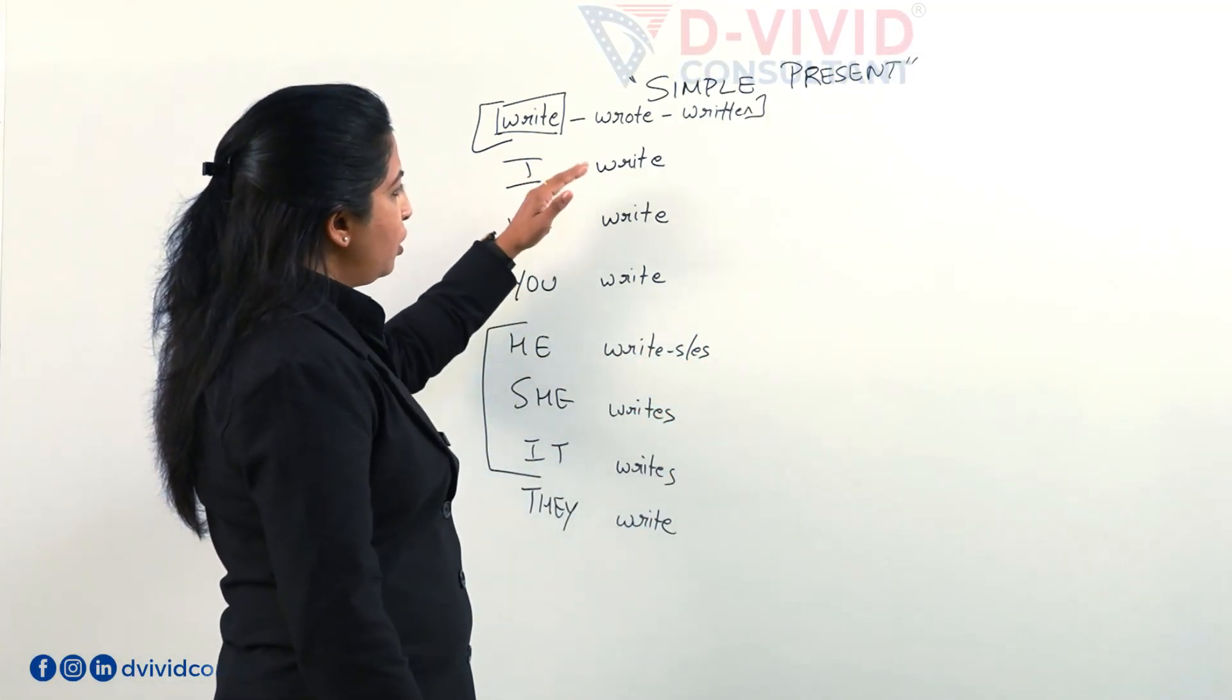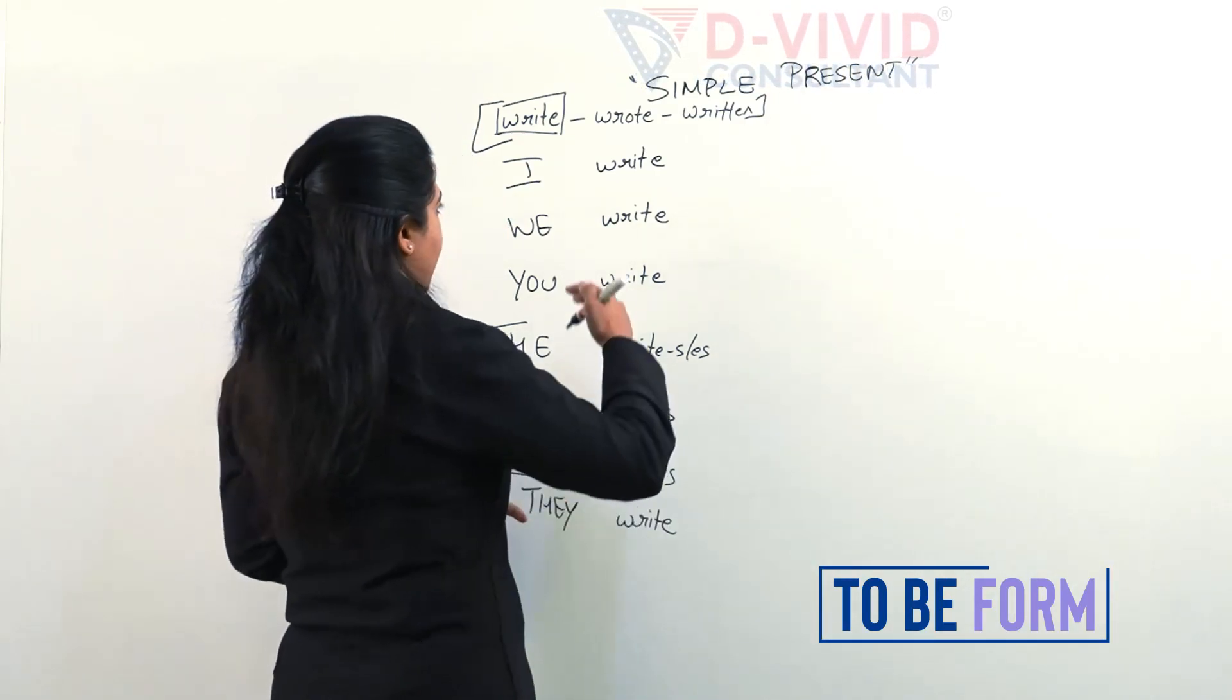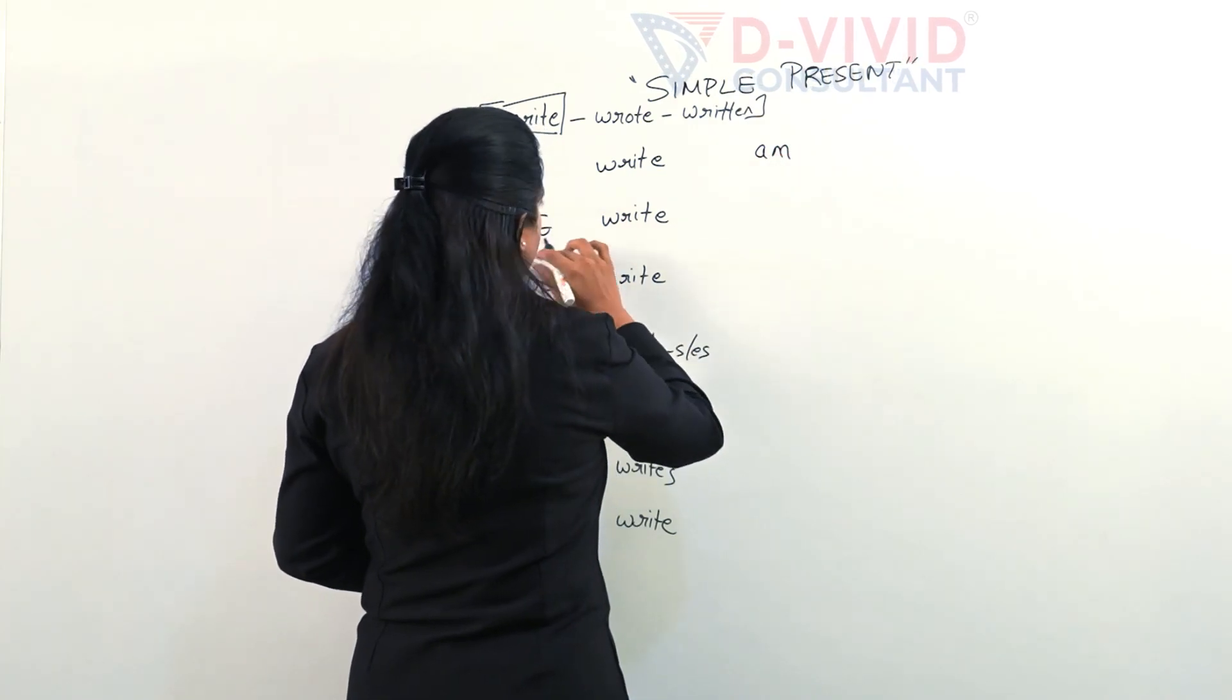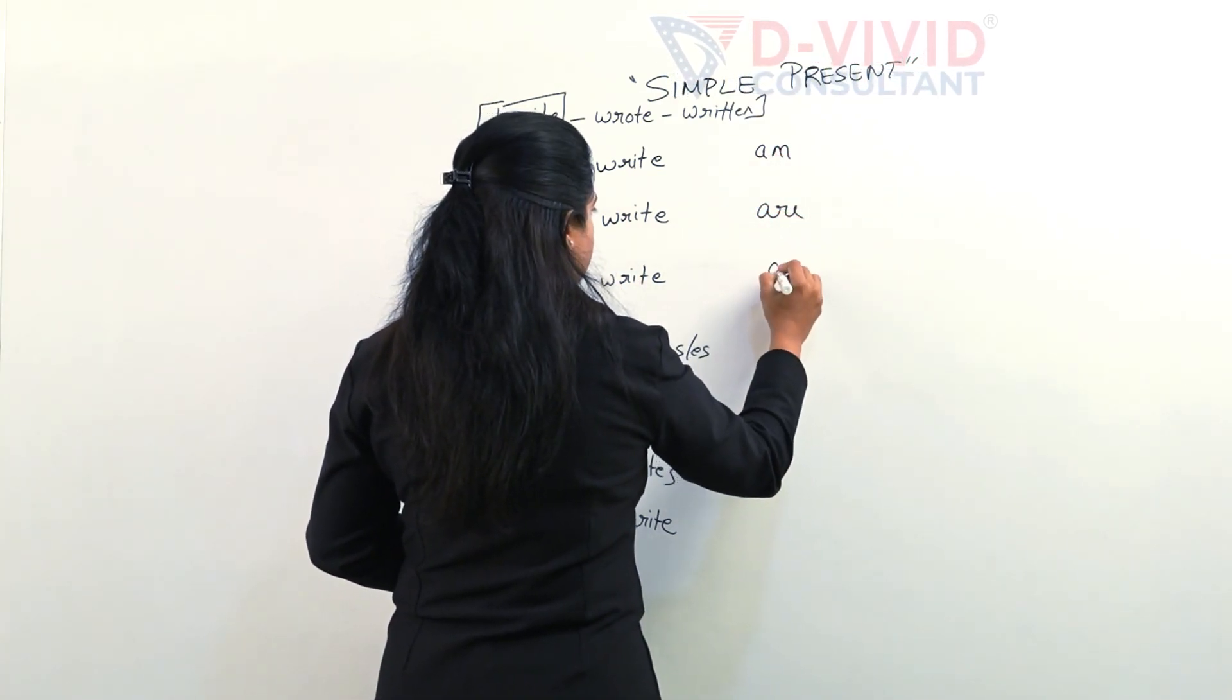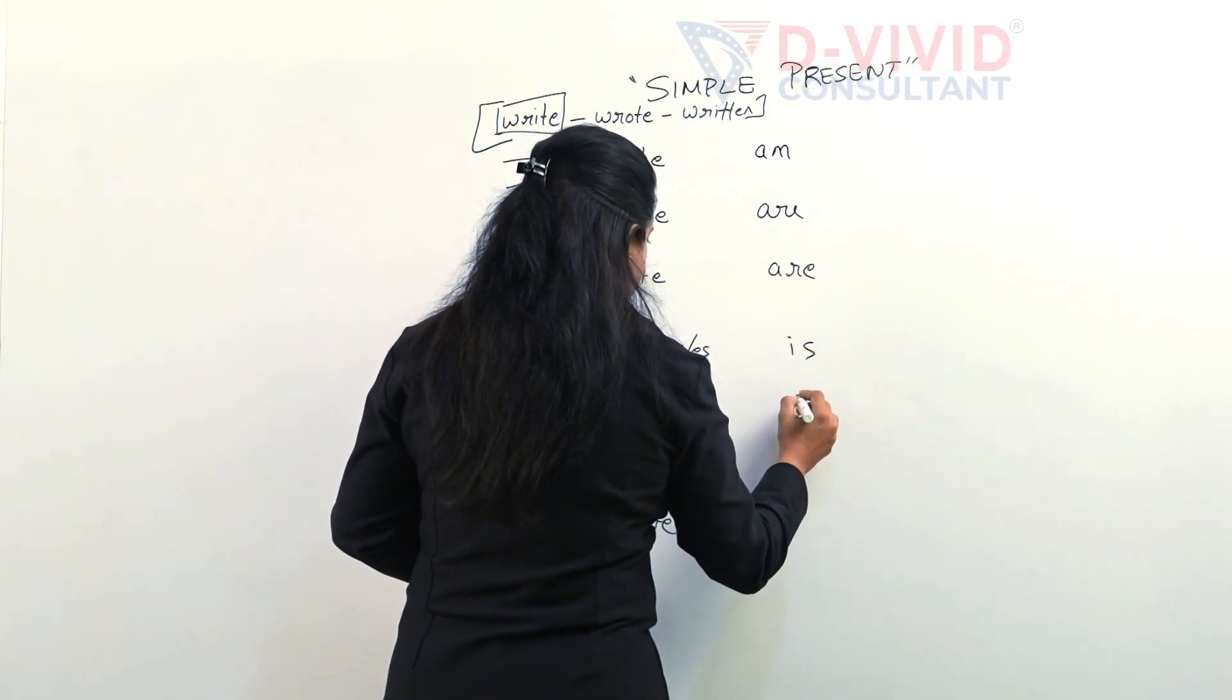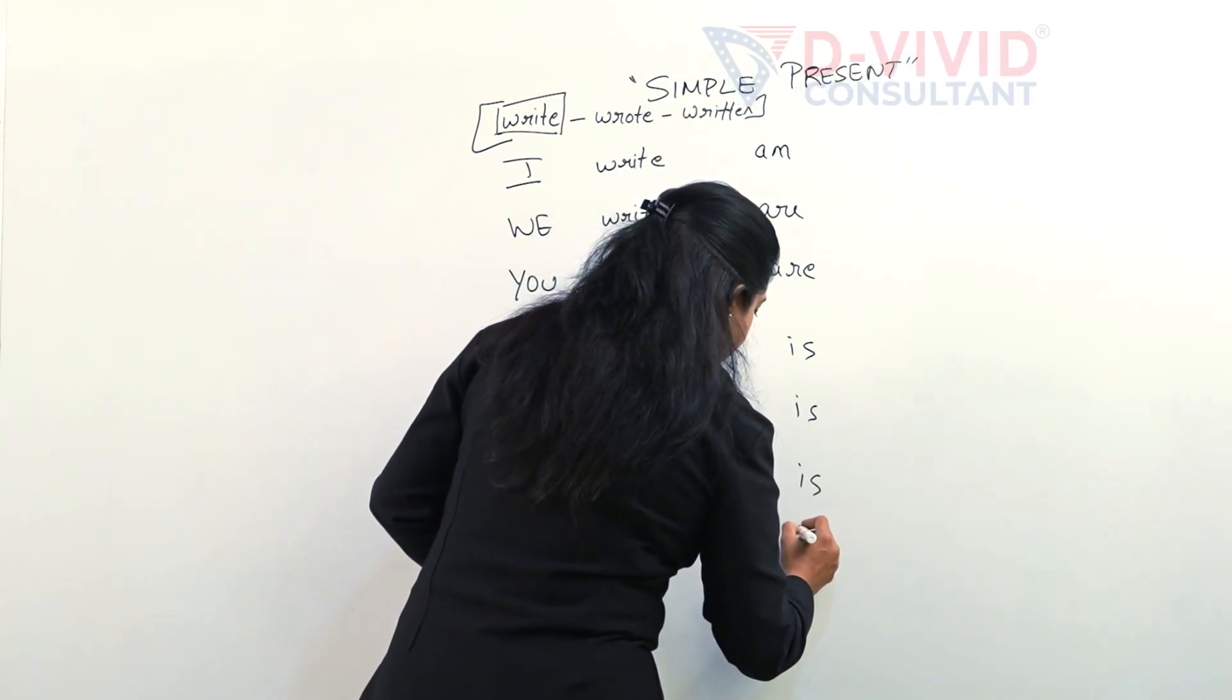Now not just this. We can also use the to be form. Like I am, we are, he is, she is, it is, and they are.